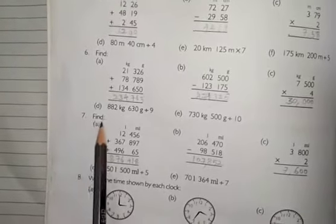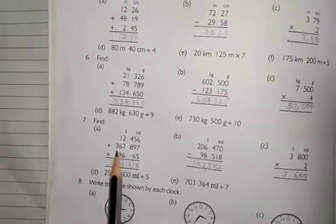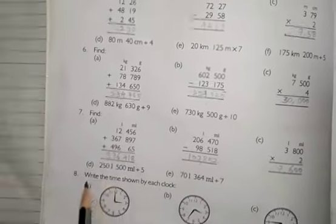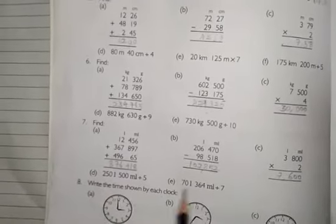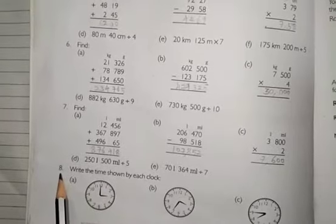Question number 7. Find. Here have addition, subtraction and multiplication. In D number, division. E number, division.